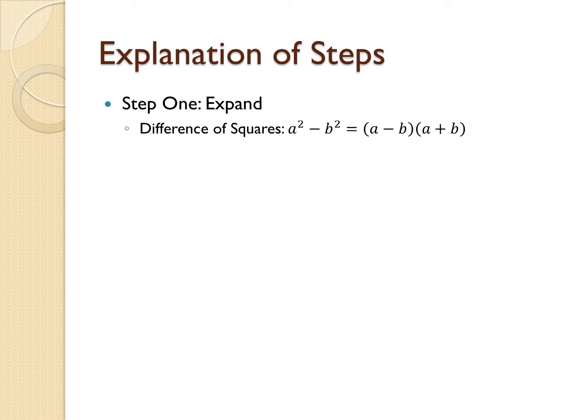By applying the difference of squares formula to our original problem of x minus 2 squared minus 16, we get x minus 2 plus 4 times x minus 2 minus 4.